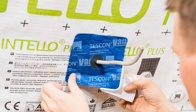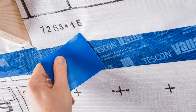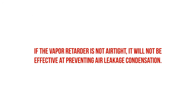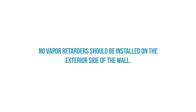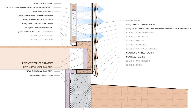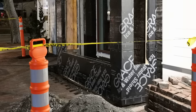We also want that vapor retarder to be airtight, because air can transport moisture at rates that are orders of magnitude higher than diffusion, and so having a vapor retarder on the interior side of that wall will be ineffective at preventing condensation if it's not airtight. We do not want any vapor retarders in most cases on the outside of that wall, since we need the ability to dry to the exterior. We don't want moisture to get trapped in the sheathing, so you should avoid impermeable products like ice and water shield for the building wrap.